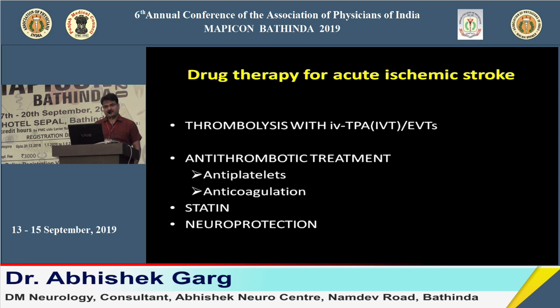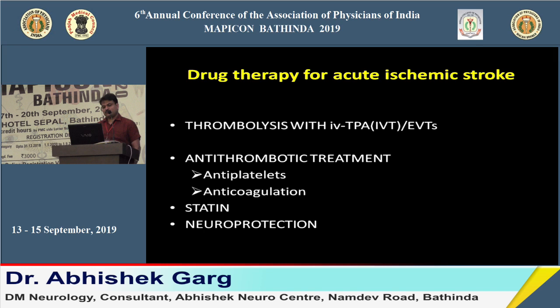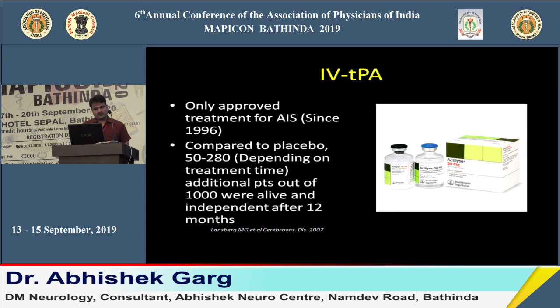For drug therapy in acute ischemic stroke, the only approved therapy since 1996 is thrombolysis with tissue plasminogen activator — intravenous thrombolysis. Endovascular therapy, also called mechanical thrombectomy, is becoming increasingly important. Other options include anti-thrombotic treatment such as antiplatelets, anticoagulation, statins, and neuroprotection.